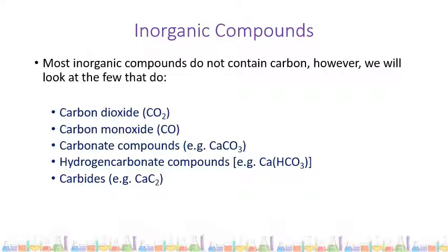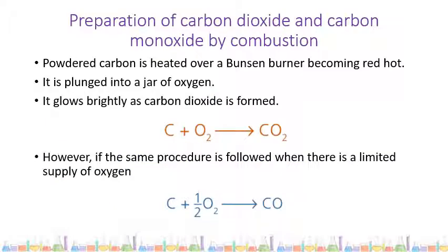Most compounds that contain carbon are studied in organic chemistry, however there are some inorganic compounds that also contain carbon. The two we're going to focus on are carbon dioxide and carbon monoxide. Other examples of inorganic carbon compounds include carbonate and hydrogen carbonate compounds — a metal bonded to either the carbonate or hydrogen carbonate ion — and carbides, which are metals bonded to carbon atoms.